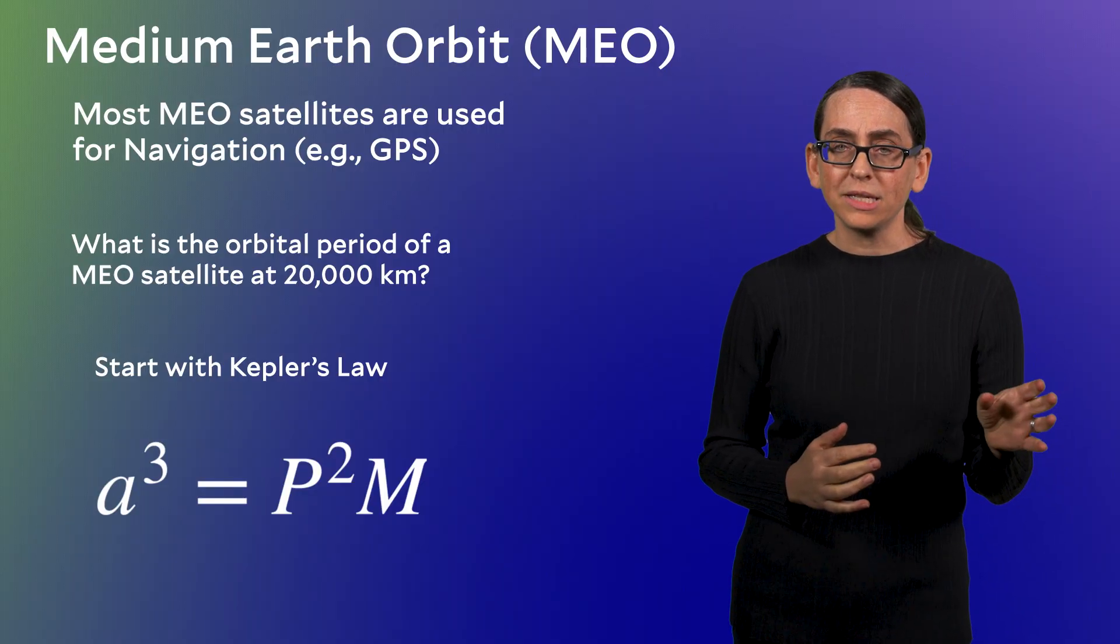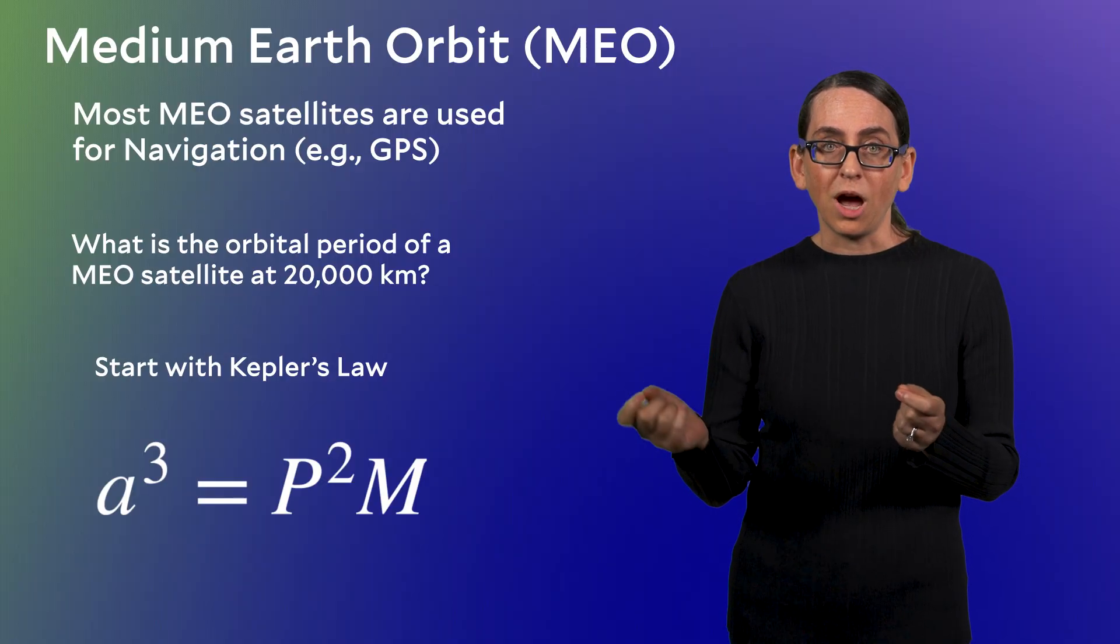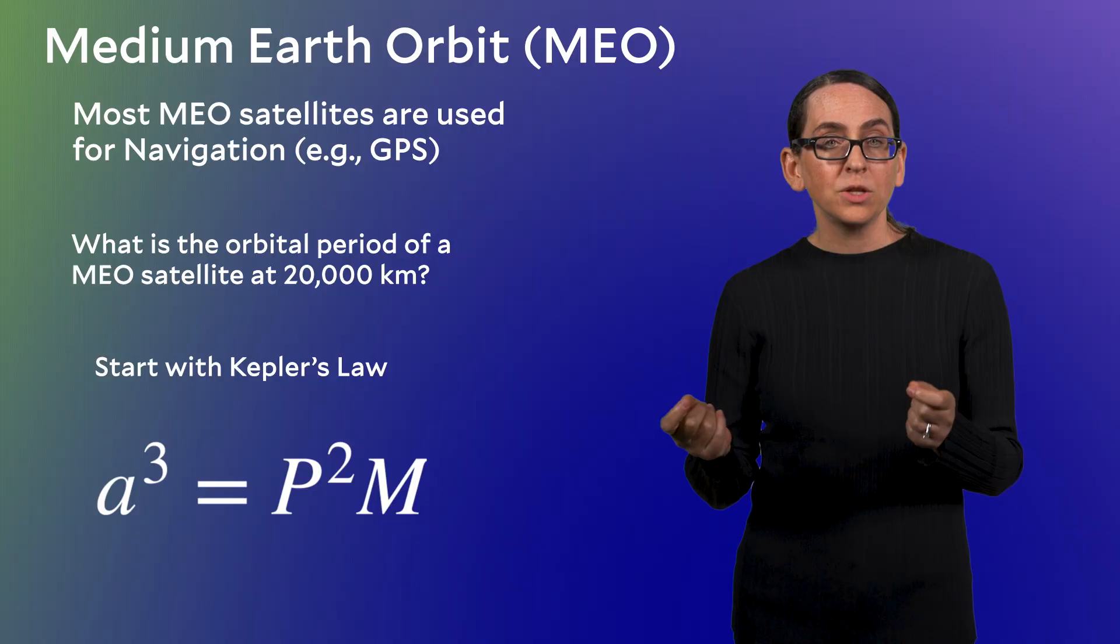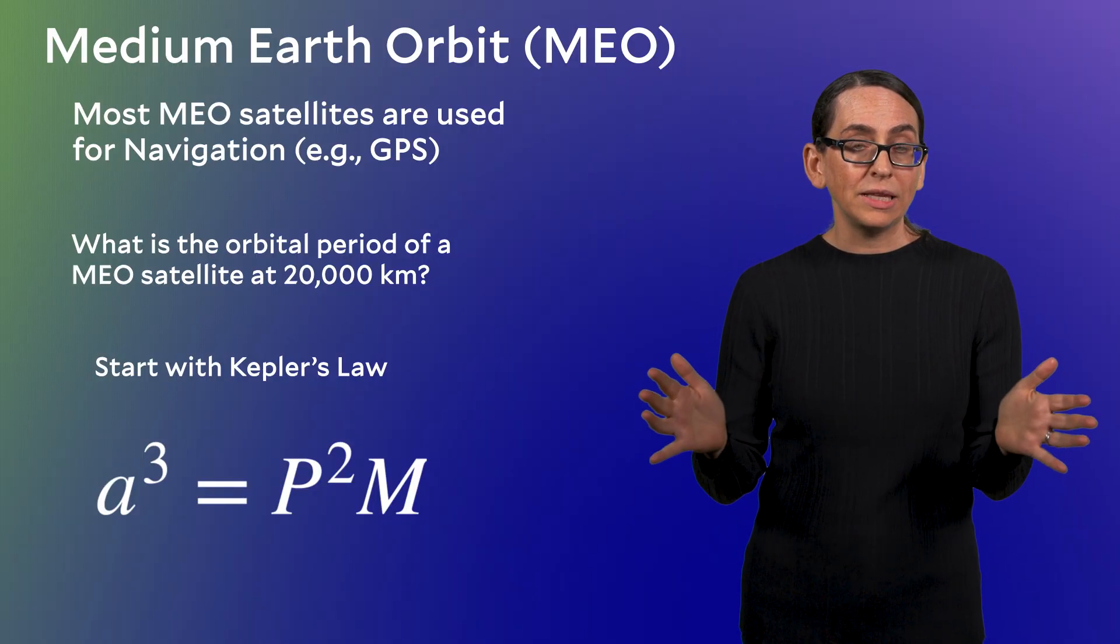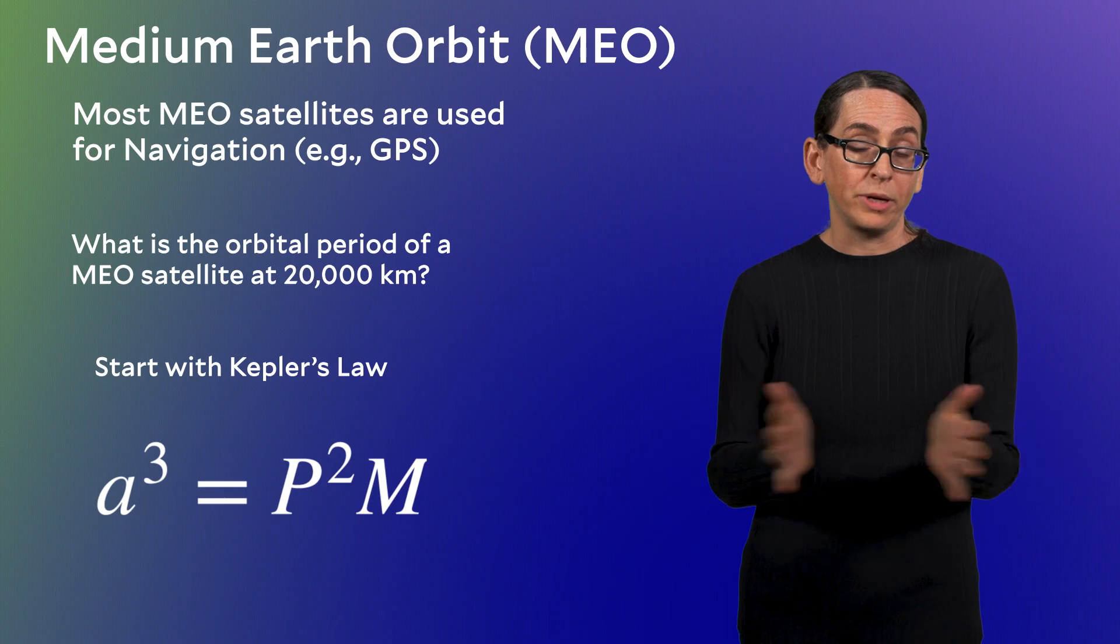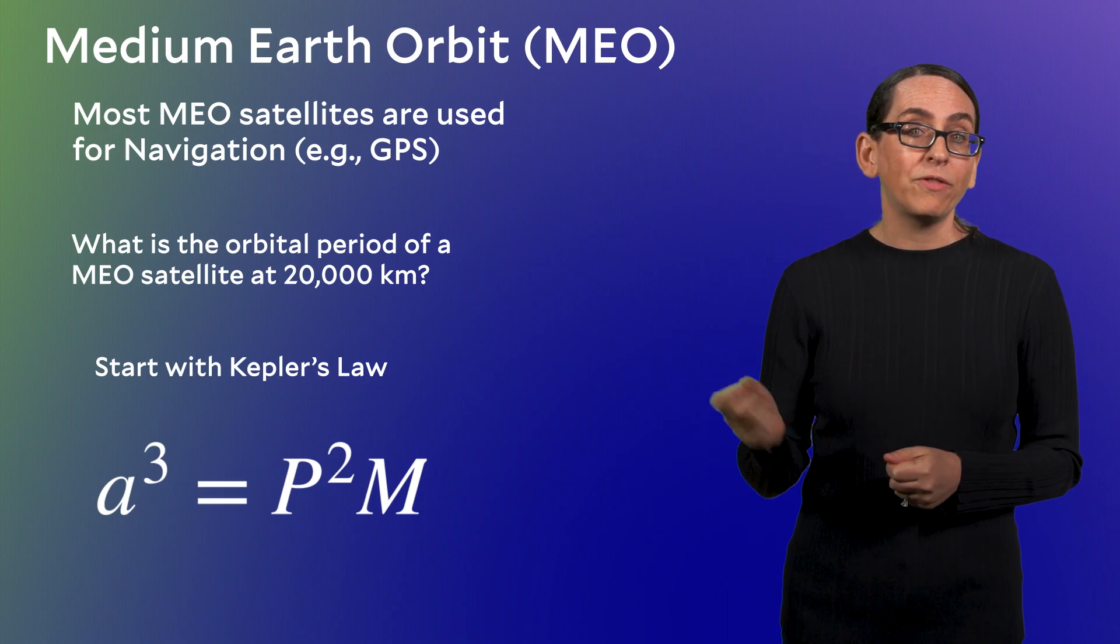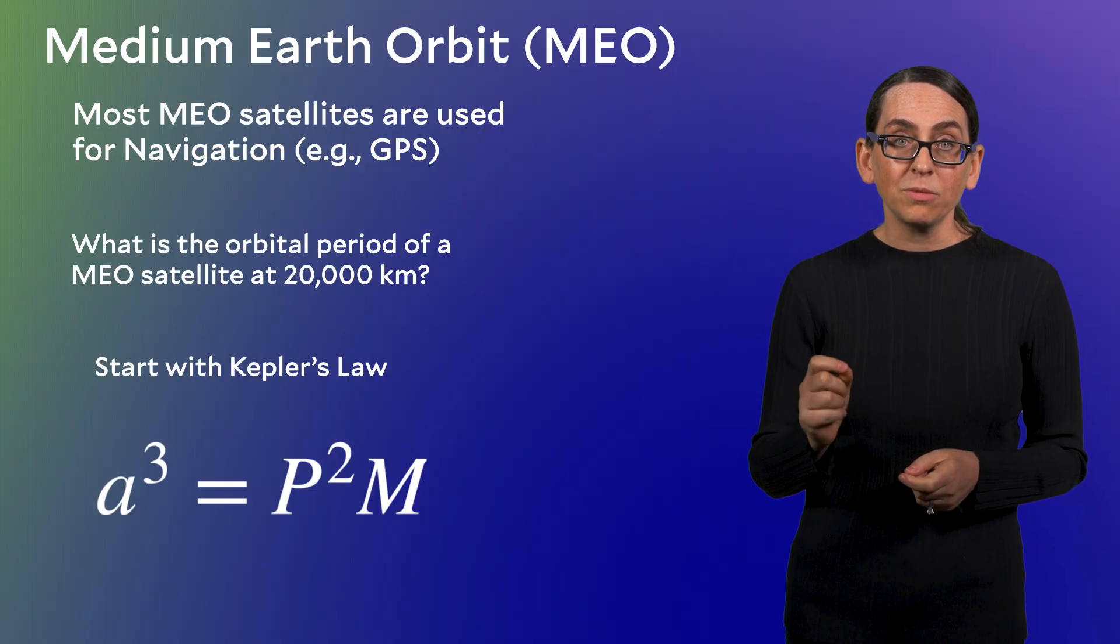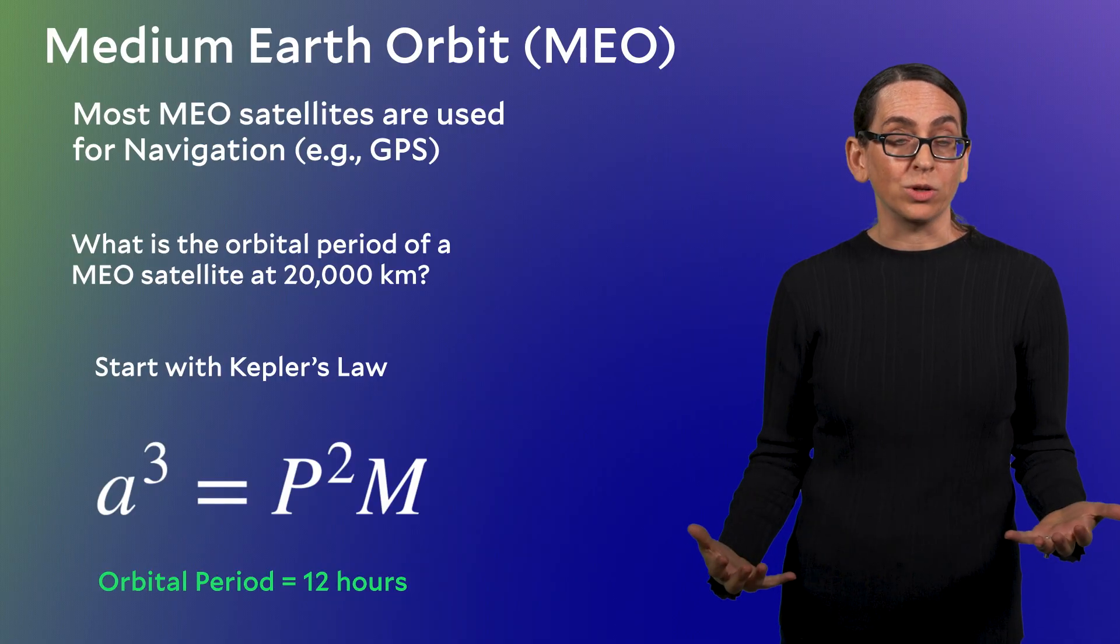From the last segment we calculated that an orbital period of 95 minutes corresponds to objects at 550 kilometers above the Earth's surface. So a satellite at 20,000 kilometers should have at least a few hours' orbital period, if not more. Doing this calculation, and we'll provide the details in a deeper dive at the end of the module, a satellite at medium Earth orbit orbiting at 20,000 kilometers has an orbital period of 12 hours.